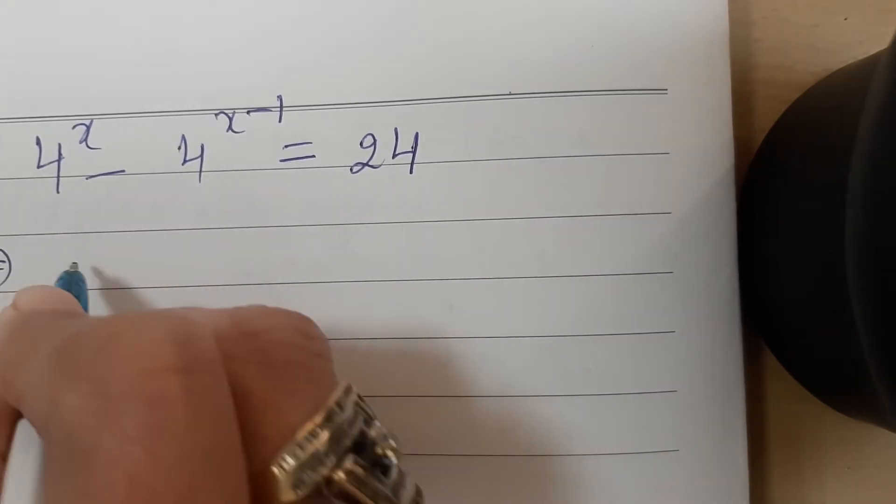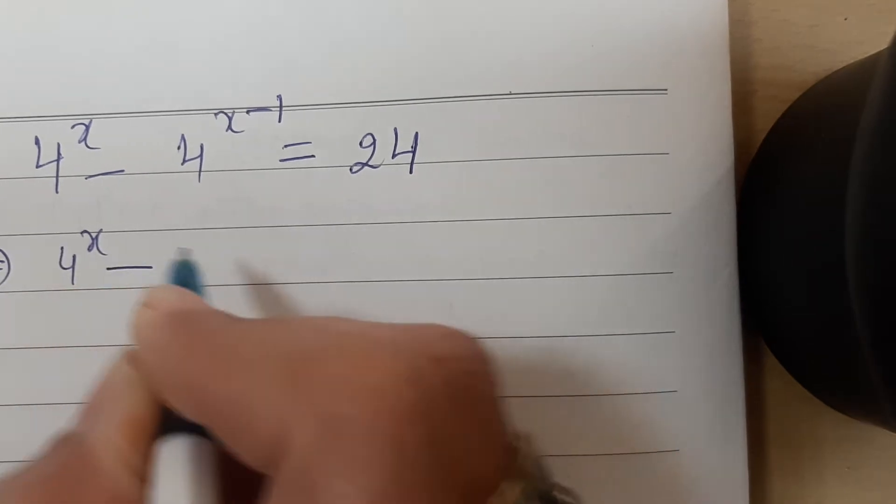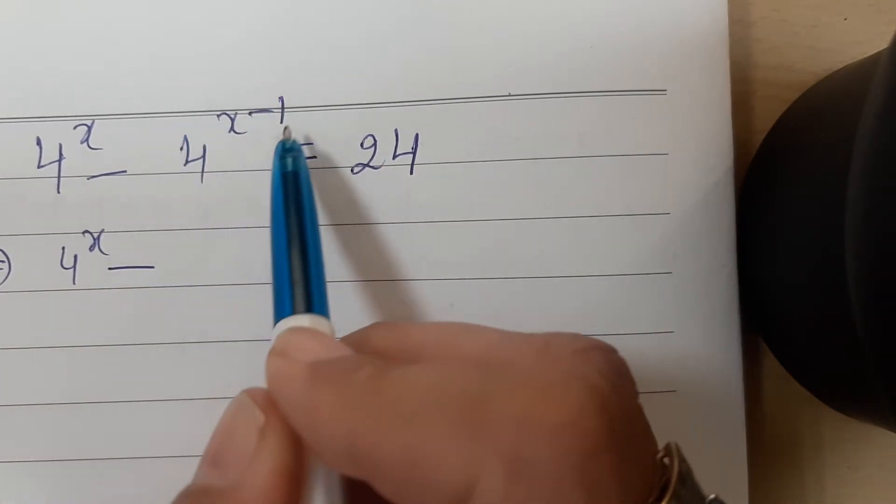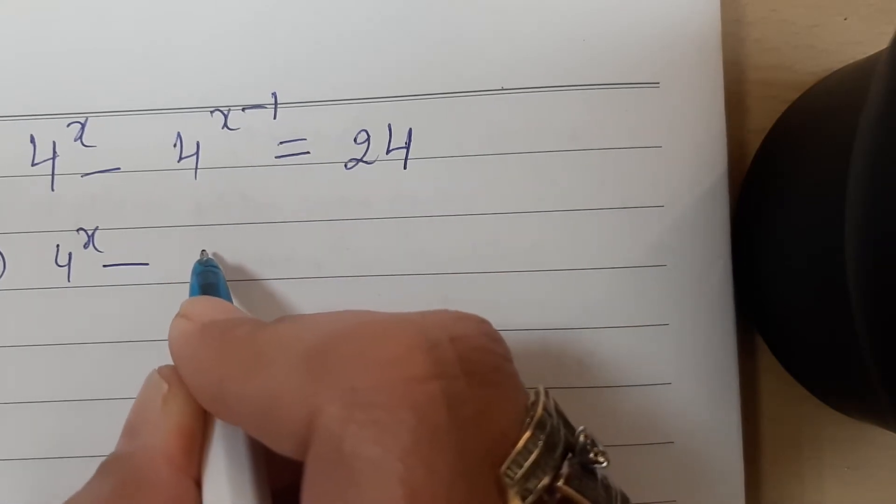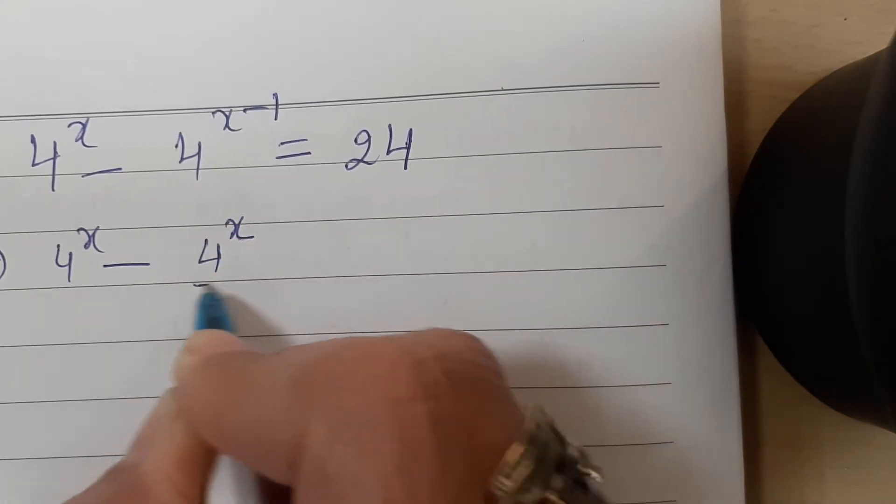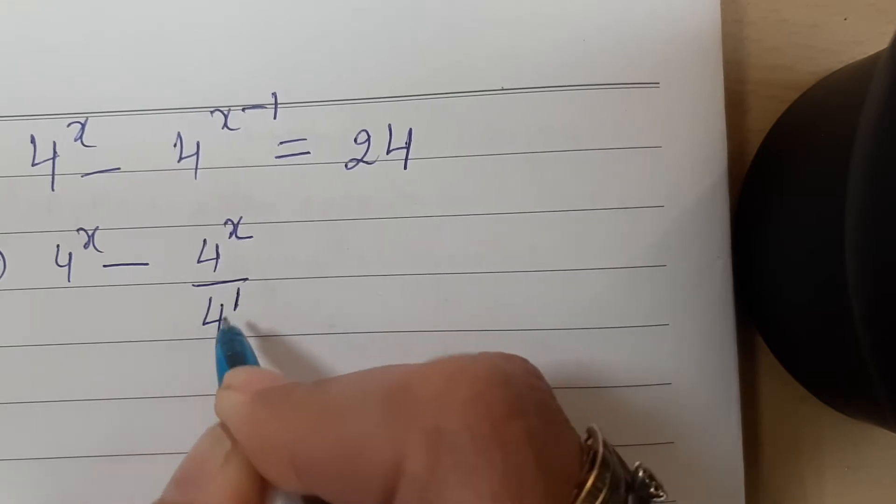So this implies 4 to the power x minus... Now how can we write 4 to the power x minus 1? We can write this as 4 to the power x upon 4 to the power 1.